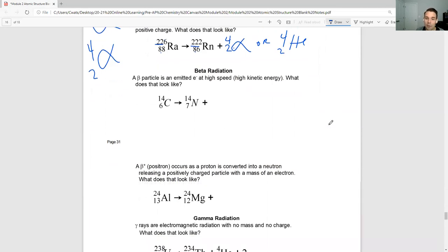You're going to get more practice with these in your homework. Beta radiation is a high-speed electron. I need 14 on the top. 14 plus what gives me 14? That's zero. I need 6 on the bottom. 7 plus what gives me 6? Negative 1. So I know it's a beta particle. Or you can literally write electron because its mass is zero, its charge is negative 1.